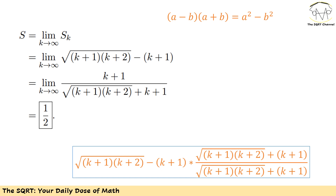I'm going to use the identity (a−b)(a+b) = a²−b². I'll rewrite the expression as a fraction: the numerator will be k+1, and the denominator will be √((k+1)(k+2)) + (k+1). Multiplying by the conjugate and applying the identity gives us the first term squared minus the second term squared, which simplifies to (k+1)(k+2) − (k+1)² = k+1 in the numerator.